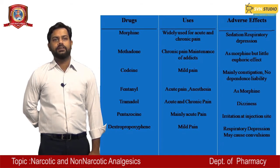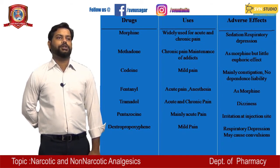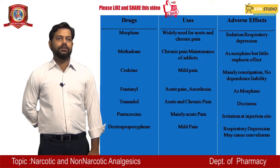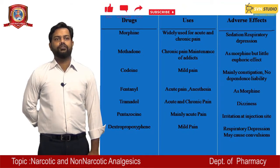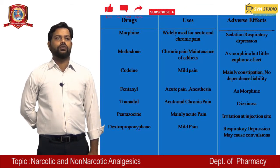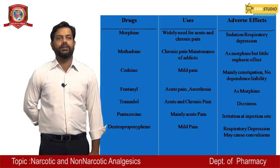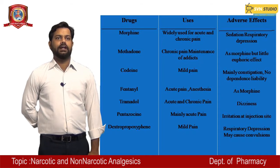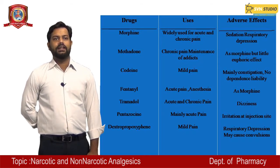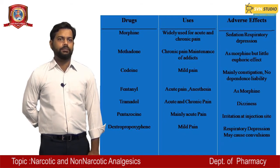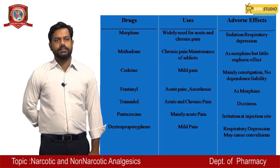Methadone is generally used in chronic pain and maintenance of addicts. Its adverse effects are similar to morphine but with little euphoric effect. Codeine is used in mild pain and its adverse effect is mainly constipation with no dependence liability.